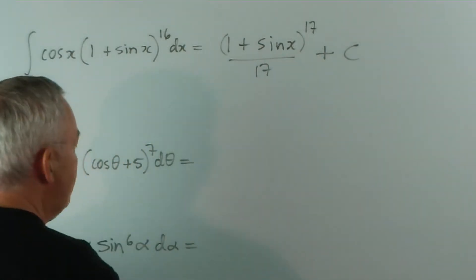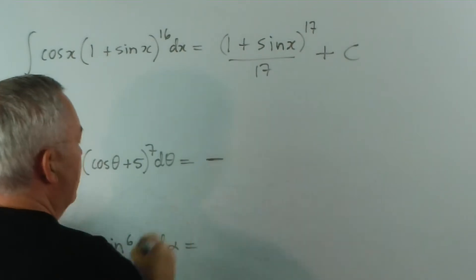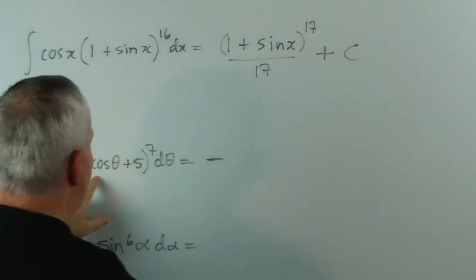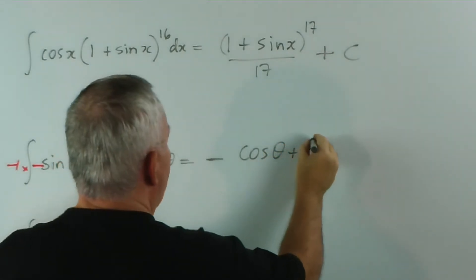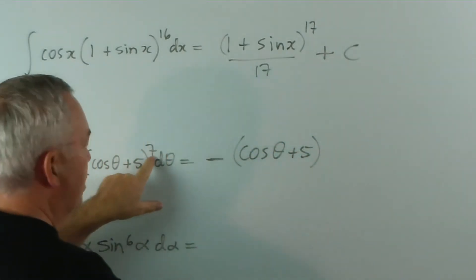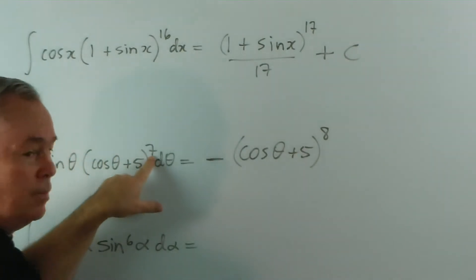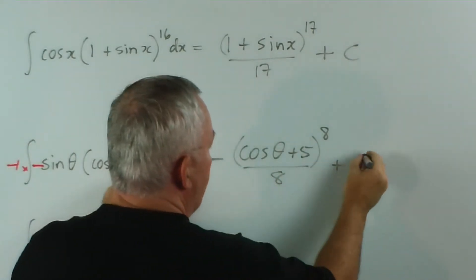You increase this power by one and write it over the bottom. This one, it's got a minus sign at the front, so I'll just leave that. And it's going to be cos theta plus 5 to the power 8 over 8 plus c.